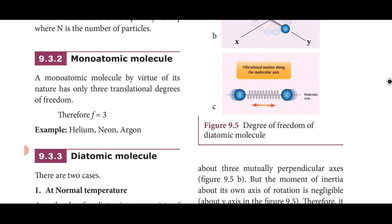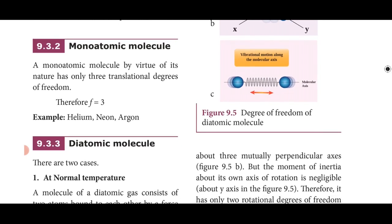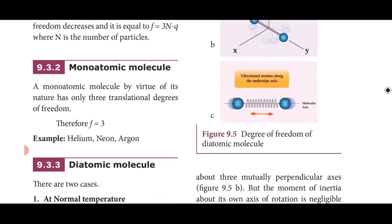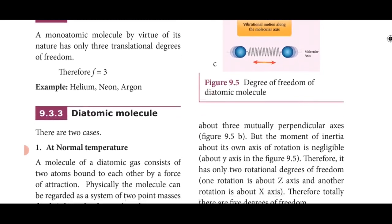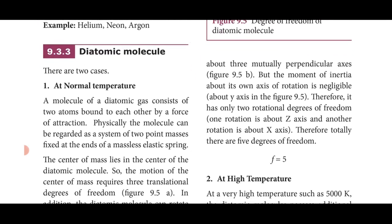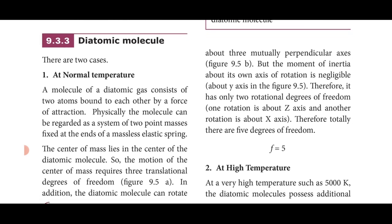For a monoatomic molecule — a single atom — by virtue of its nature it will have three translational degrees of freedom. So f = 3. Examples of monoatomic molecules are helium, neon, and argon.